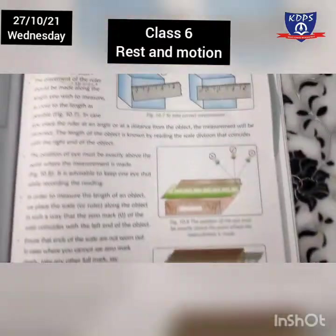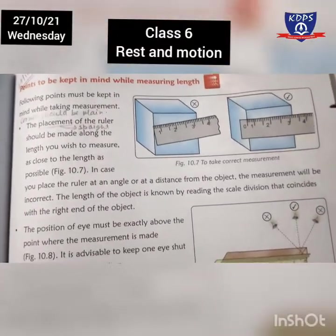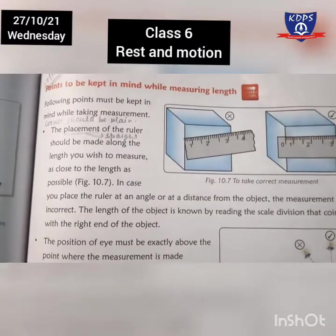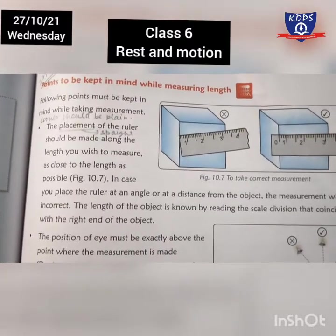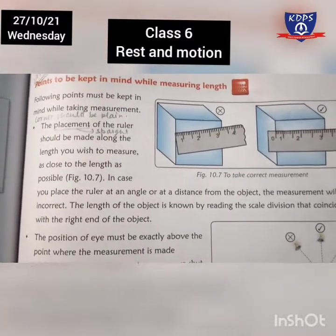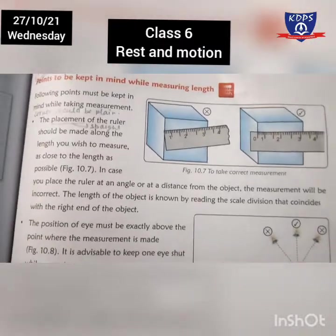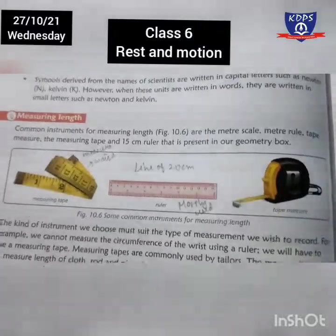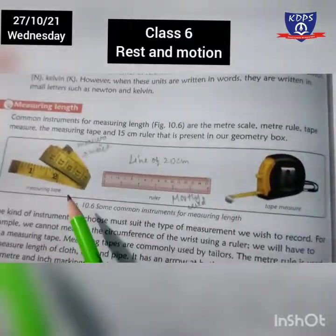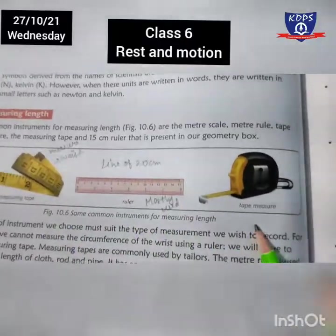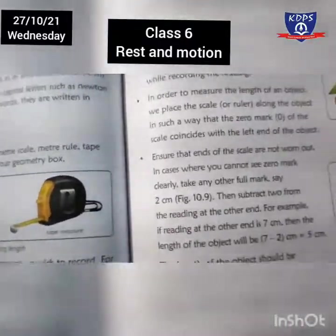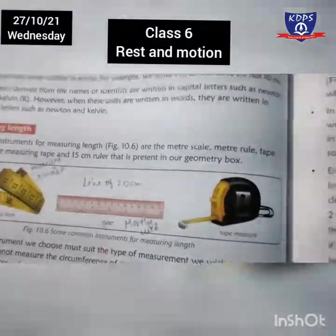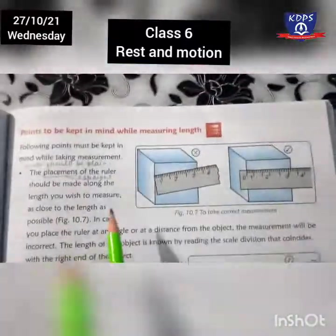In the previous class we discussed how we can measure length. There are three types of measuring instruments: measuring tape, ruler, and tape measure. These are the three different ways through which we can measure things — we can use an inch tape, ruler, or any tape measure.